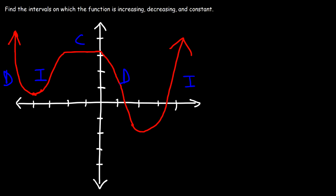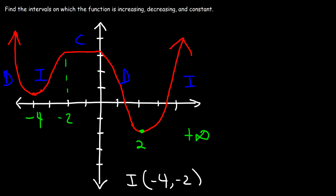Let's determine the intervals where the function is increasing first. It's increasing starting around negative 4 — it doesn't have to be exact — and stops approximately at negative 2. Then it increases again starting around 2, and since there's an arrow, it continues on to infinity. So it's increasing from negative 4 to negative 2, union, and from 2 to infinity.